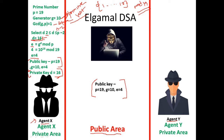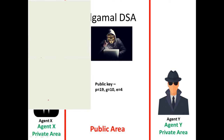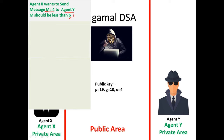We have finished the first step of ElGamal digital signatures: generation of the public key and private key. Now agent X must generate the signature before transmitting the message. Agent X wants to send message M equal to 4 to agent Y. He must generate a signature and attach it to this message. One important condition is that the message must be less than P, and since P is 19, M equal to 4 satisfies this.